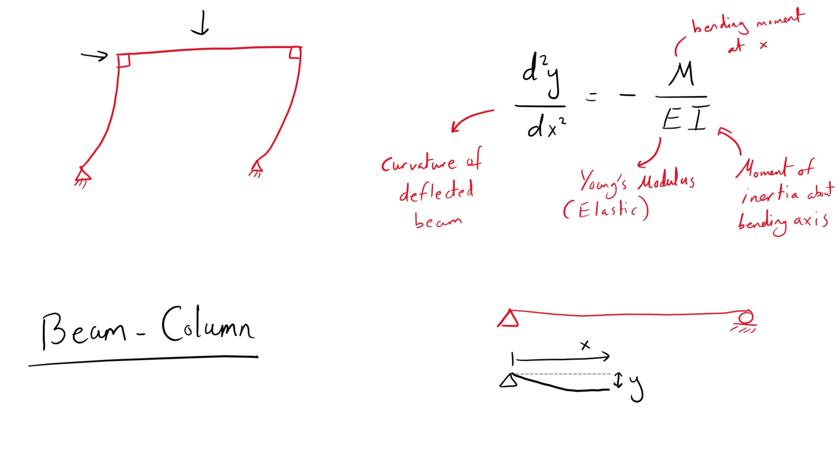X is a dimension in the running length of the beam and Y is the vertical displacement at distance X from the left support and thus is a function of X. This is why the second derivative of Y with respect to X is the curvature of the member.